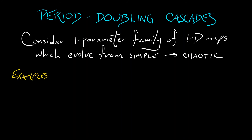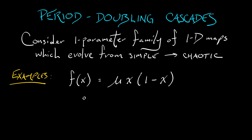Among the examples that we might look at are, of course, the logistic map, where I'm going to use mu for my parameter: mu times x times (1 minus x). Or I could use mu times sine of x. It looks kind of similar, but it's a very different function with different dynamics. Or I could take a different form of a quadratic: mu minus x squared, using mu to rigidly translate that up and down.